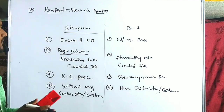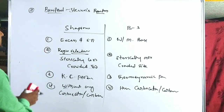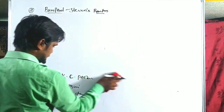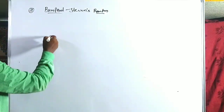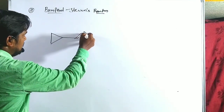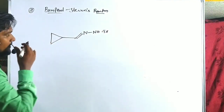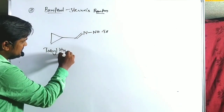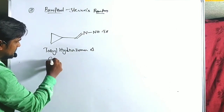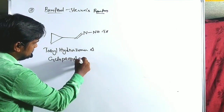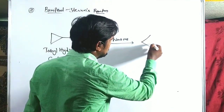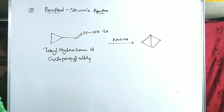There are two special exceptional cases of the Bamford-Stevens reaction. The first special case: the tosyl hydrazone of cyclopropyl aldehyde, in the presence of sodium methoxide, gives bicyclobutane as the product. This is an exceptional outcome distinct from simple olefin formation.